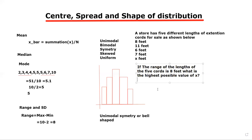So if the range of the length of the 5 cords is 8 feet, what is the highest possible value of X? We know the range is 8 feet. You need to find the highest possible value of x, so let your maximum value be x and your minimum value from the table you can see is 6 feet. So we can write 8 equals x minus 6, and from here x equals 14 feet.